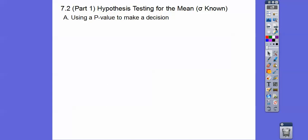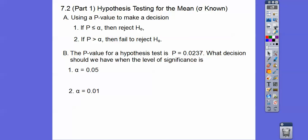So using p-values to make a decision. If your p-value is less than your level of significance, that's what this is, our area, this sigma symbol, then we reject our null hypotheses. If it's greater than, then we fail to reject.